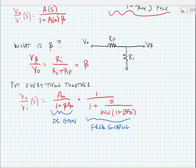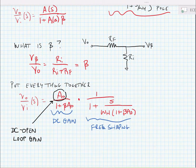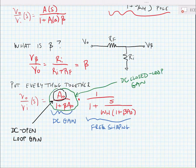Now we have a couple of terms that we want to memorize here. The term A₀ is the DC open loop gain of the op-amp. The term A₀ divided by (1 + βA₀) is called the DC closed loop gain. The term βA₀ is called the loop gain.